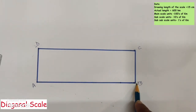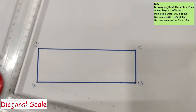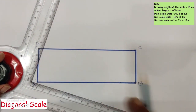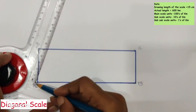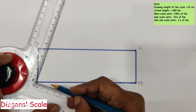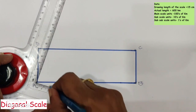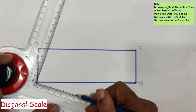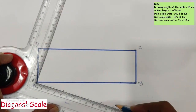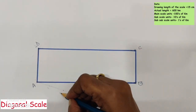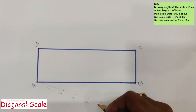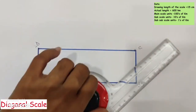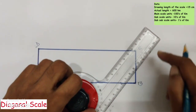AB, which equals 15 centimeters, has to be divided into six equal parts. Dividing 15 centimeters into six equal parts directly with a scale is not possible, so we use an acute angle line method. Draw an acute angle line to AB at point A, then take six equal divisions from point A onwards on this acute angle line. Number the divisions 1 through 6, then align point 6 with point B.